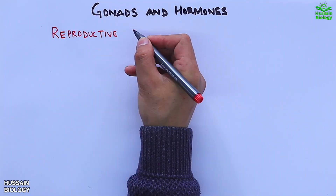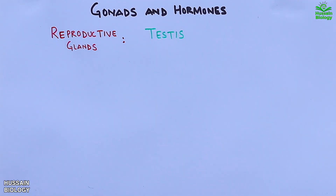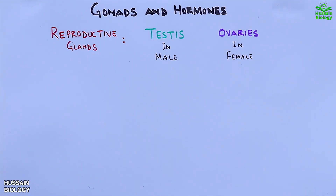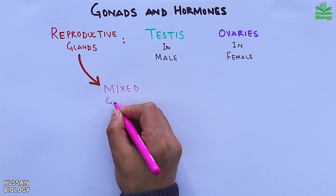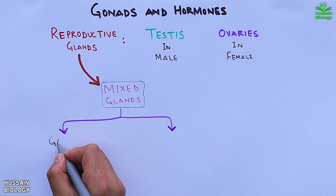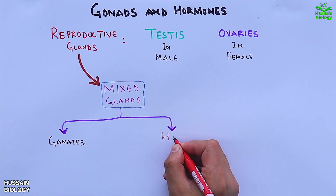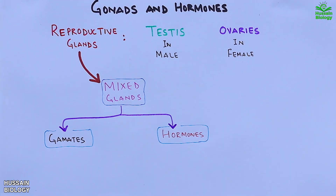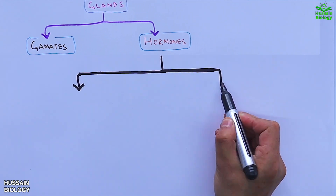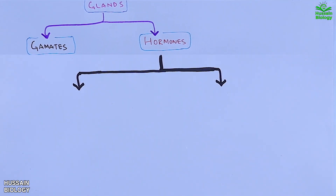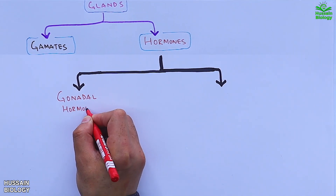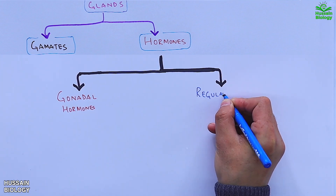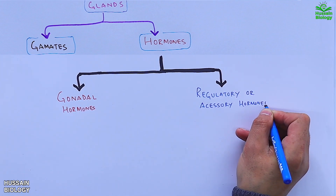The gonads are reproductive glands — we have testes in males and ovaries in females. These reproductive glands are a kind of mixed glands since we get gametes as well as hormones from them. Here we are more concerned with the hormones. There are two sets of hormones from gonads: first, the gonadal or primary hormones, and second, the accessory or regulatory hormones.